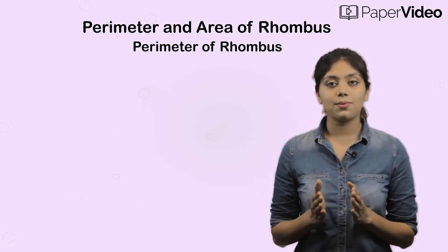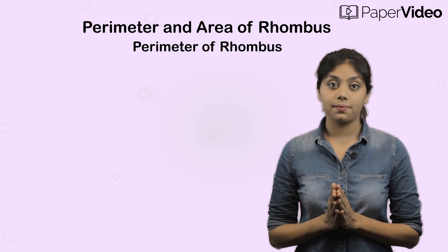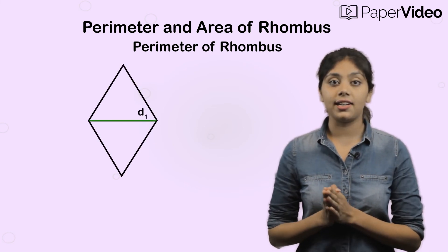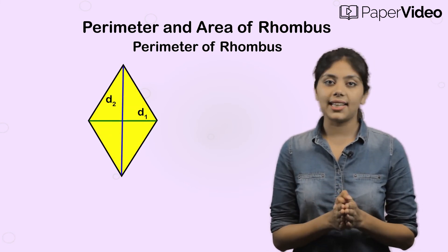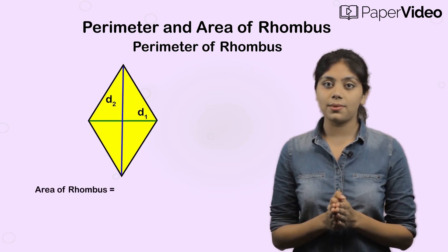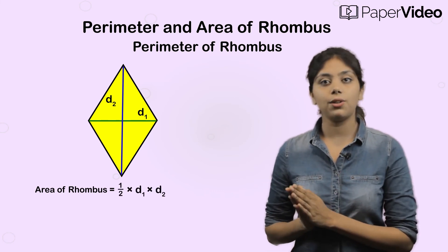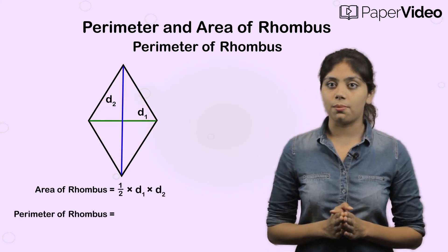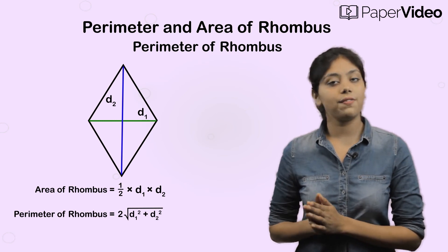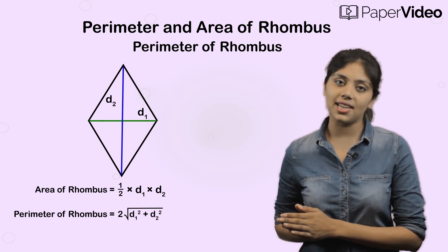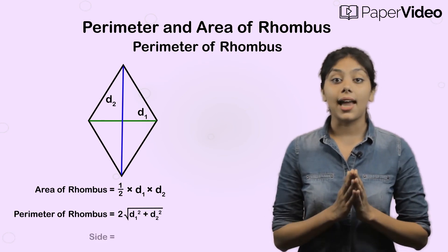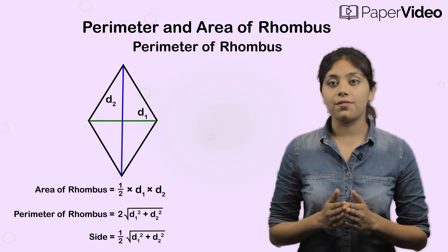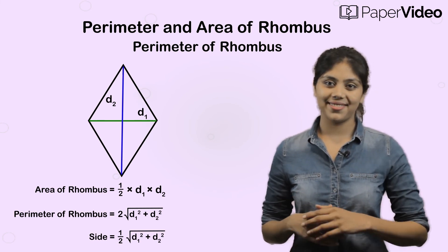Let us now quickly summarize what we have learned. If we have a rhombus whose diagonals are D1 and D2, then: area of the rhombus equals half times D1 times D2; perimeter of the rhombus equals 2 times the square root of D1 squared plus D2 squared; and the length of the side of the rhombus equals half times the square root of D1 squared plus D2 squared.